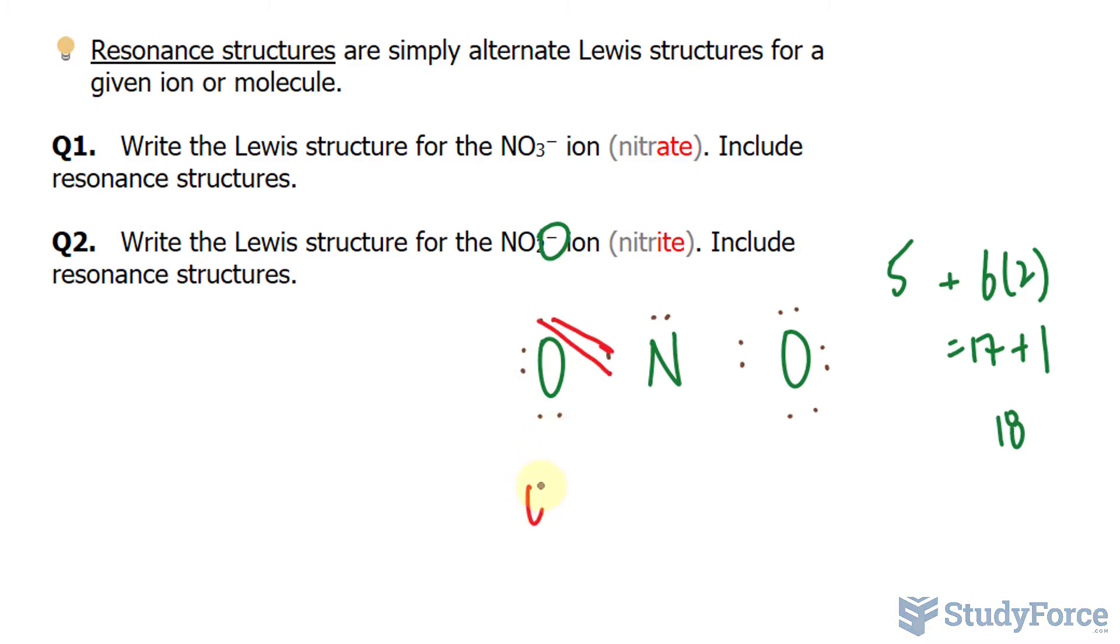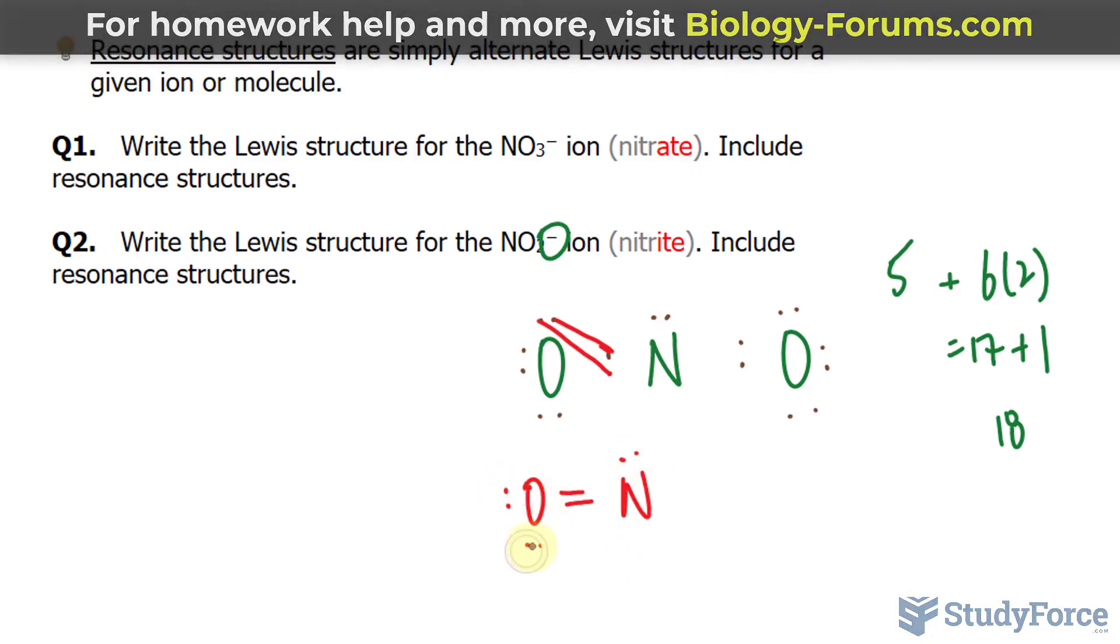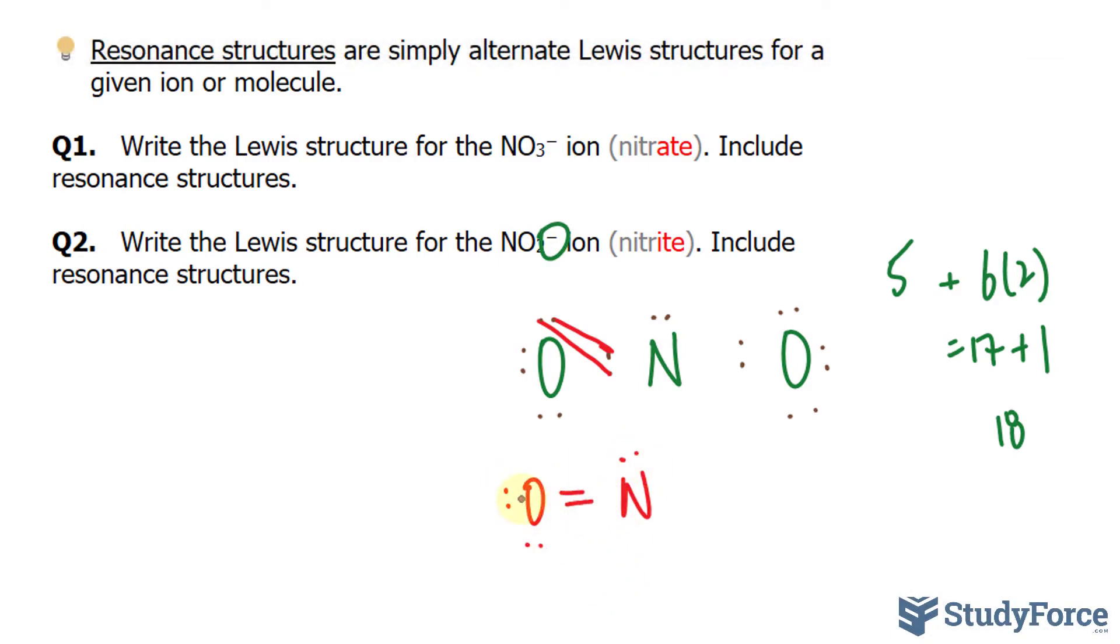As a result, you end up with oxygen, and these 2 electrons are in their own orbital. These electrons make a double bond, so we can write that as 2 lines. Nitrogen, so we have 1, 2, 3, 4, 5, 6, 7, 8 for oxygen.